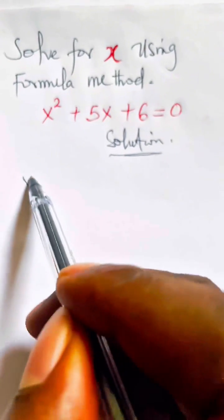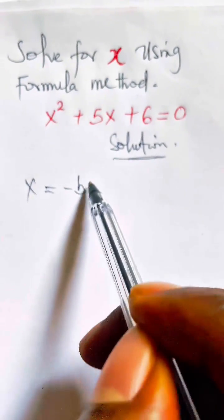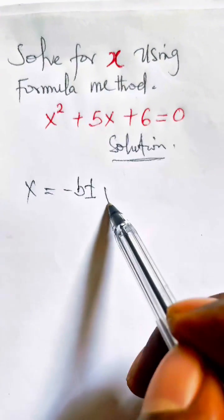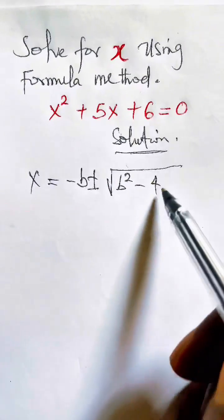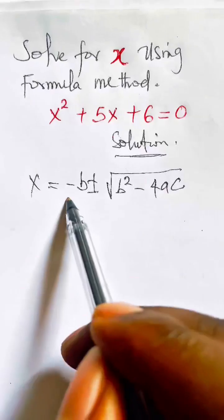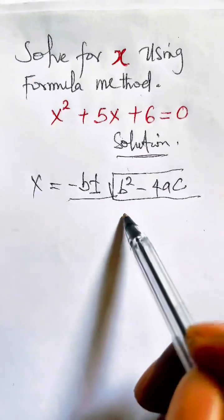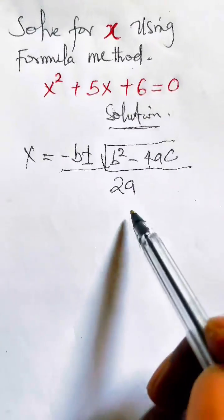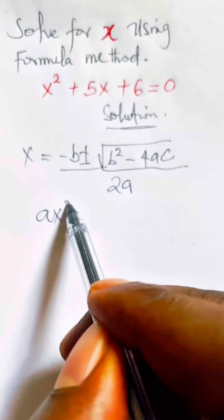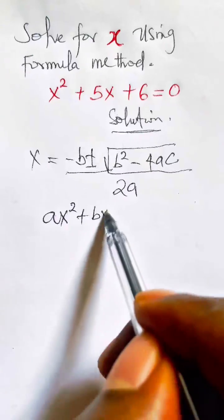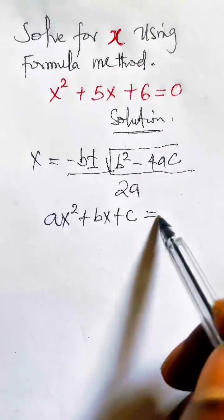The formula method: x equals minus b plus or minus square root of b squared minus 4 times a times c, all divided by 2a. That may be the formula. Now, they have to use them again. We think about the general form of quadratic equation: ax squared plus bx plus c equal to 0.